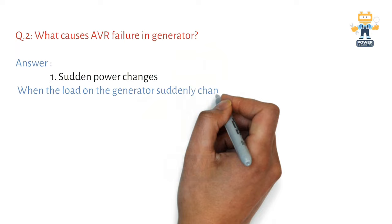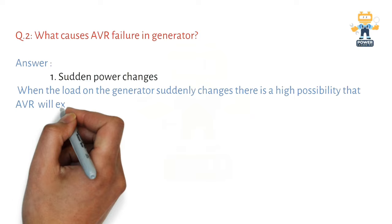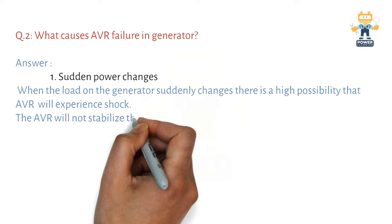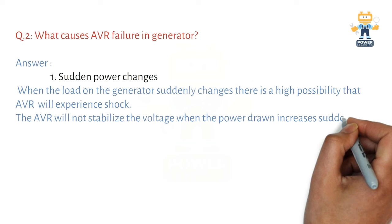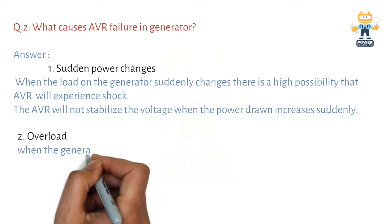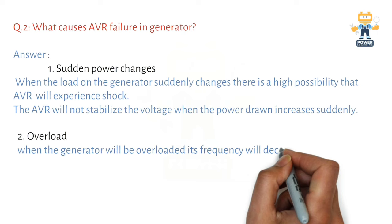Cause number one: Sudden power changes. When the load on the generator suddenly changes, there is a high possibility that the AVR will experience shock. The AVR will not stabilize voltage when the power drawn increases suddenly.